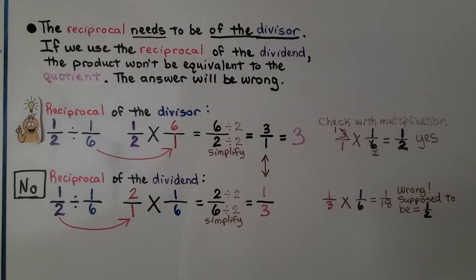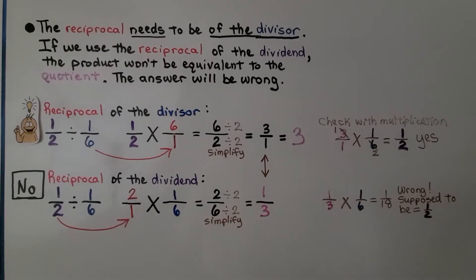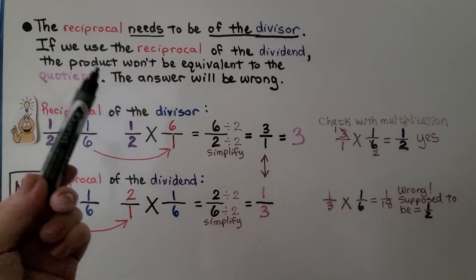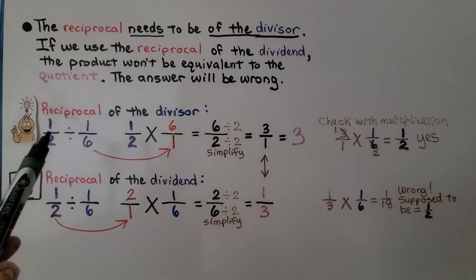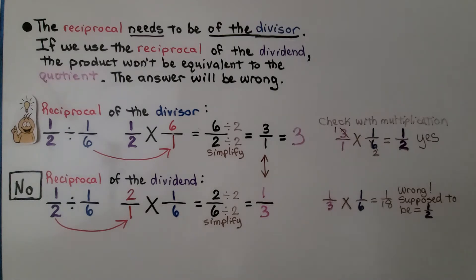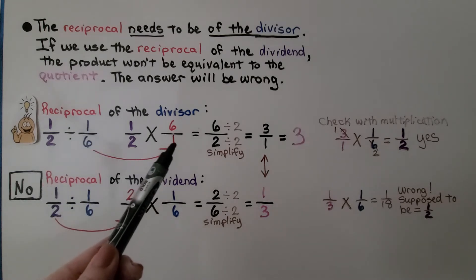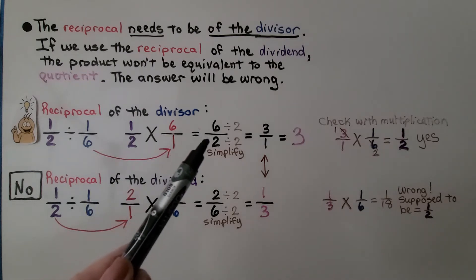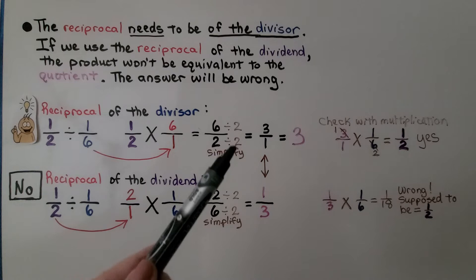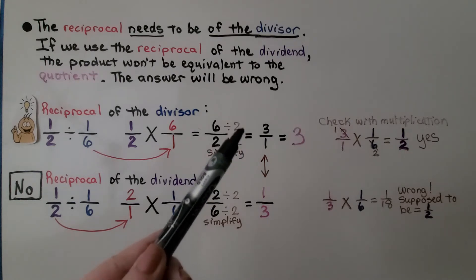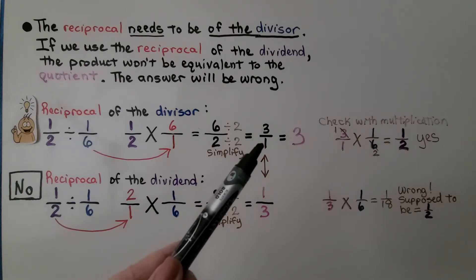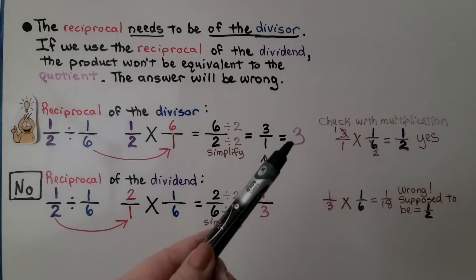The reciprocal needs to be of the divisor. If we use the reciprocal of the dividend, the product won't be equivalent to the quotient — the answer will be wrong. Here, we use the reciprocal of the divisor. One-sixth is the divisor; we flip it around and do six over one, and we multiply. We get six-halves. We simplify using the greatest common factor for six and two, which is two. We get three over one, and when we simplify that, that's three whole.